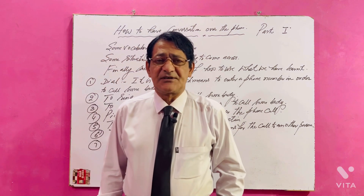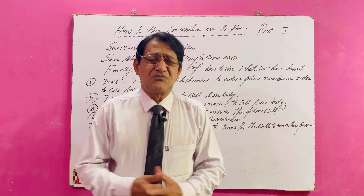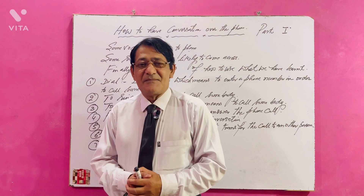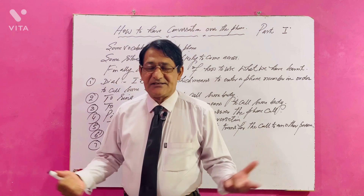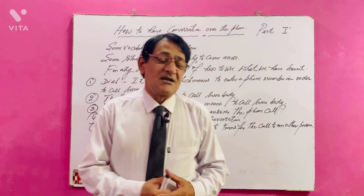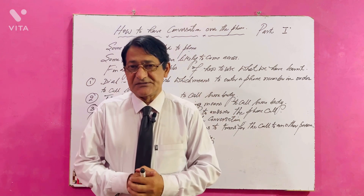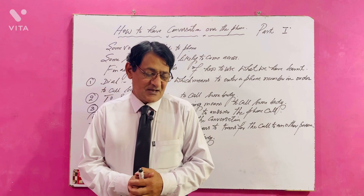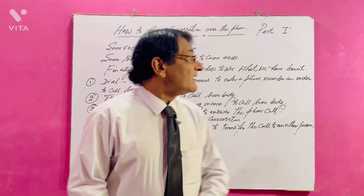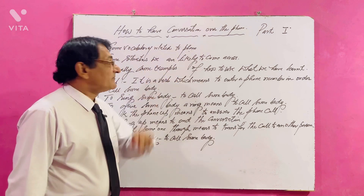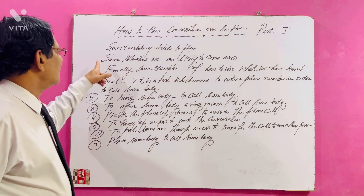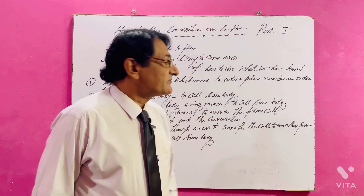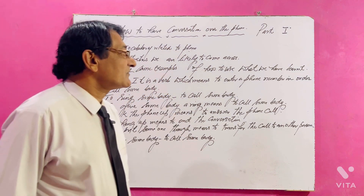We are going to learn some vocabulary related to phone conversations. Most students really feel scared while having a conversation over the phone in English, because it becomes really scary — we can't see the physical features or facial expressions of the person. That's why it becomes frightening. Here we will learn vocabulary mostly used in phone conversations, and in Part 2 we'll learn situations and examples.